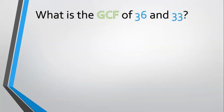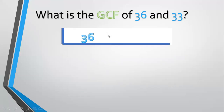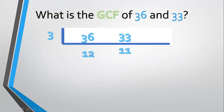Another example, what is the GCF of 36 and 33? Align 36 and 33. Divide by a prime common factor, 3. 36 divided by 3 equals 12. 33 divided by 3 equals 11. 12 and 11 have no common factor. So the GCF is equal to 3.